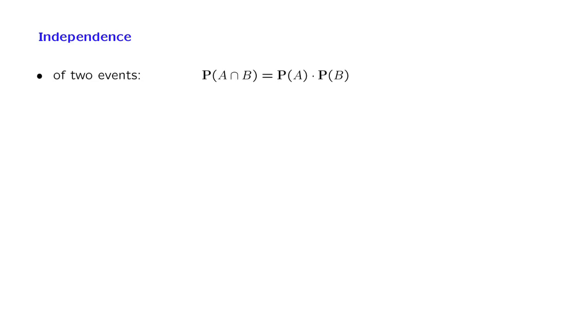We now come to a very important concept: the concept of independence of random variables. We are already familiar with the notion of independence of two events. We have the mathematical definition, and the interpretation is that conditional probabilities are the same as unconditional ones. Intuitively, when you are told that B occurred, this does not change your beliefs about A, so the conditional probability of A is the same as the unconditional probability.